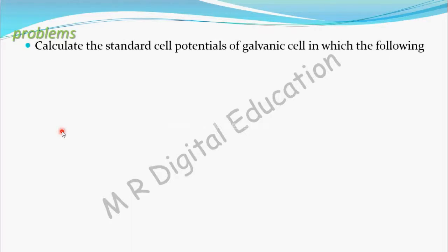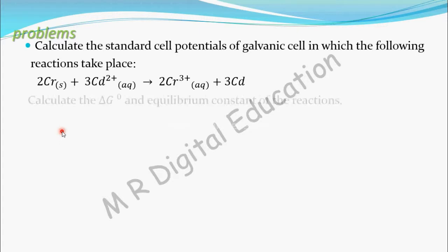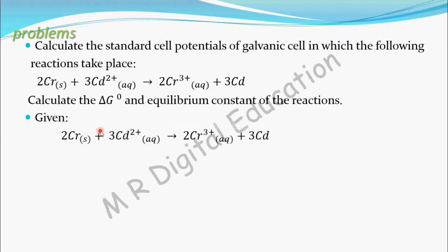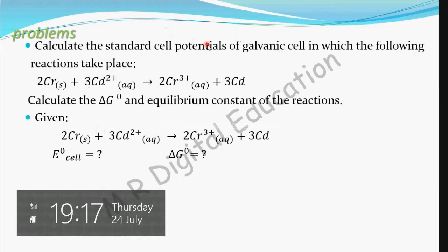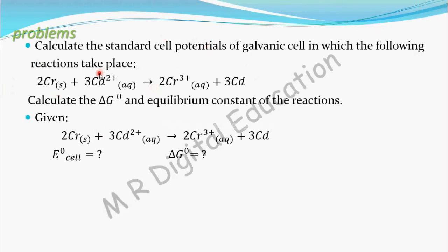Let's see our problem: calculate the standard cell potential of a galvanic cell in which the following reaction takes place. Given this reaction, calculate the delta G naught and equilibrium constant of the reaction. This is a galvanic cell reaction, and for this cell reaction we have to calculate E naught cell, delta G naught, and K. You know that E cell equals E right minus E left.